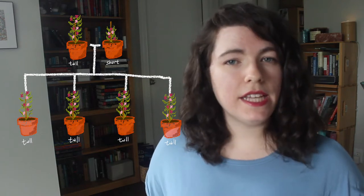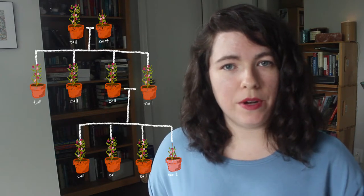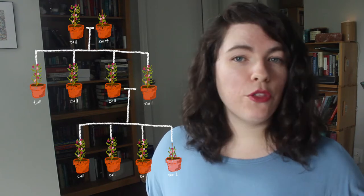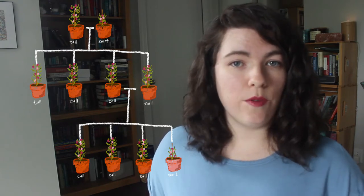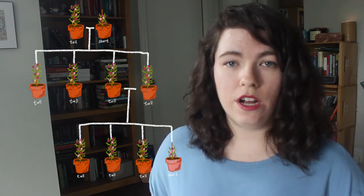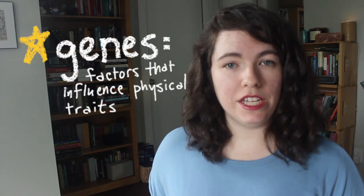However, in the second generation — the offspring of those offspring — about three quarters were tall while one quarter were short. Mendel repeated his experiments many times over a period of 10 years and looked at other traits as well, including the color of the flowers and the shape and size of the pea pods. Mendel determined that offspring get one factor to influence each trait from each parent. These factors are called genes.